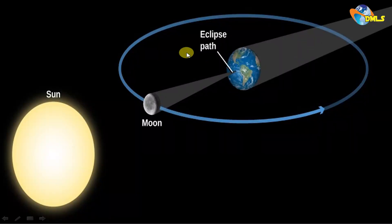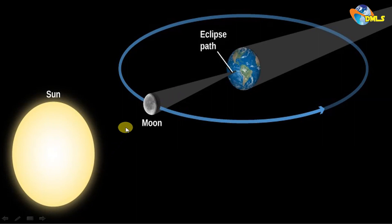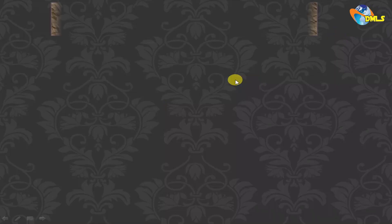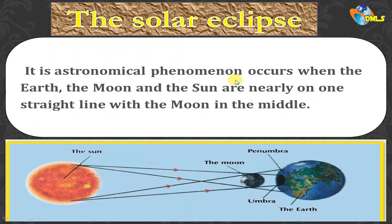Here, the moon is considered an opaque object and the sun is a source of light. The rays of the sun move in a straight line and fall on the moon. The moon is opaque and doesn't allow the rays to reach the Earth — it blocks the rays. So you observe that a shadow is formed on the Earth.